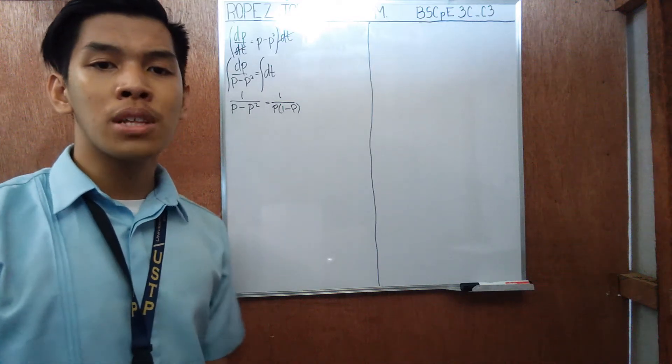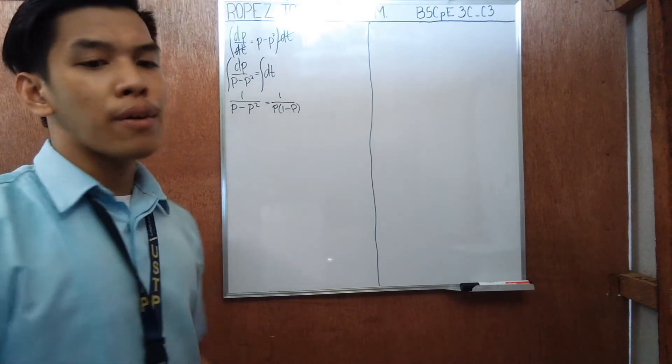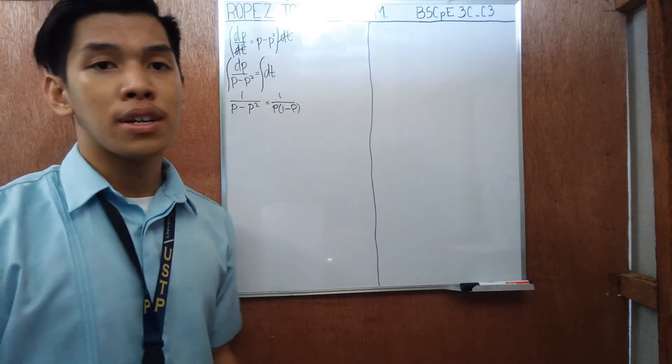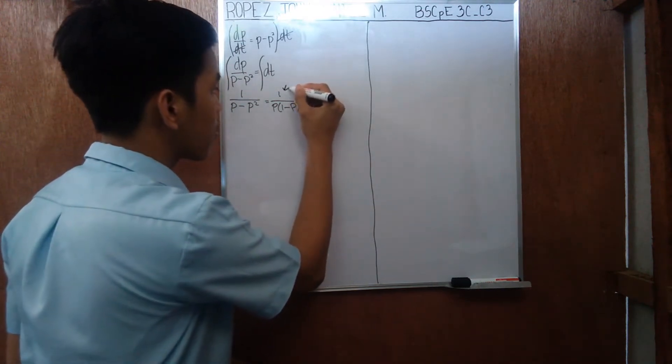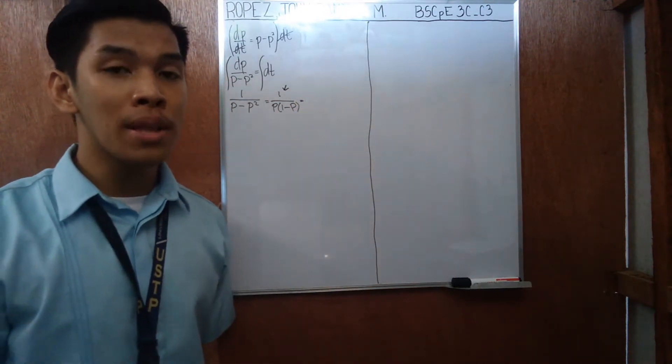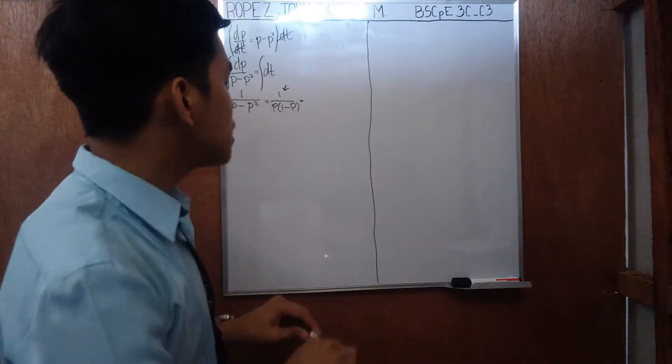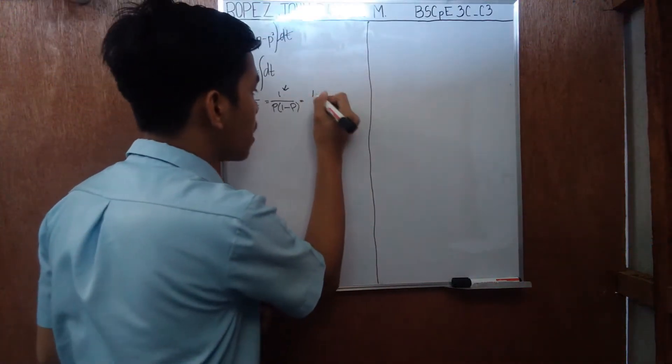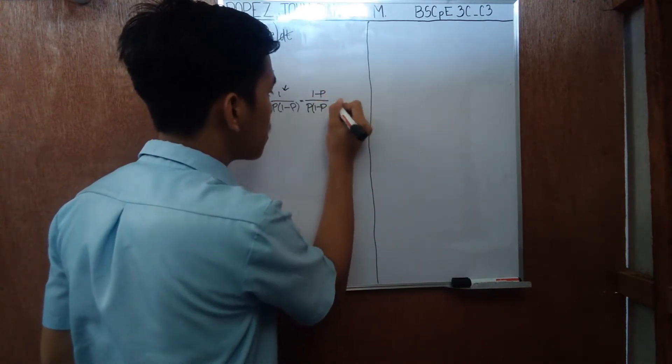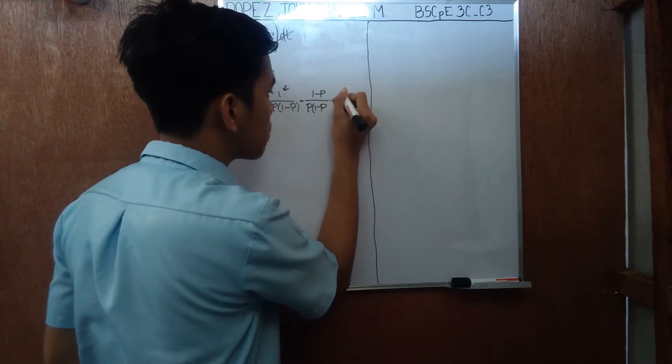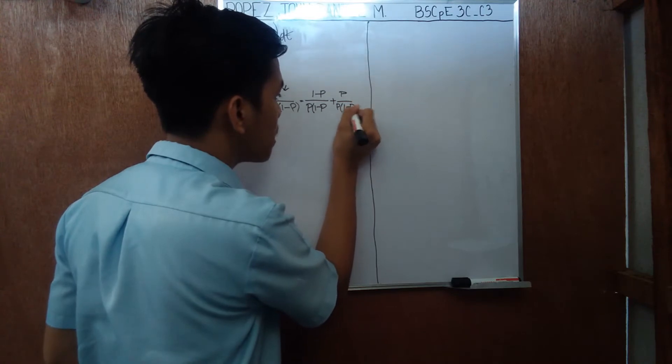There's a couple of ways to actually rewrite this and break it up. Another way of doing this is to be clever, so watch this. Here we have 1. I'd really like to put 1 minus p so it would cancel. So we'll just put it there: 1 minus p over p, 1 minus p plus p over p, 1 minus p.